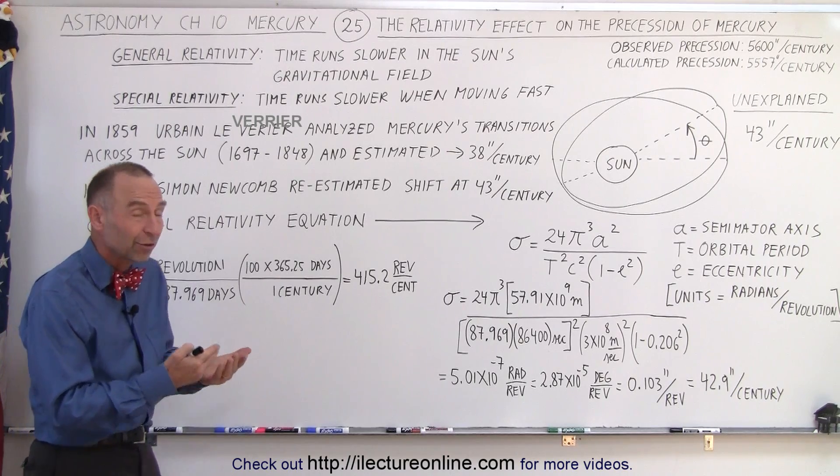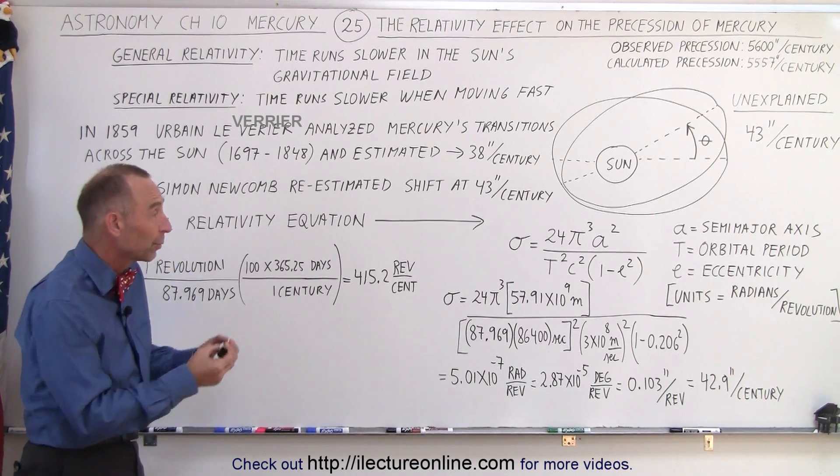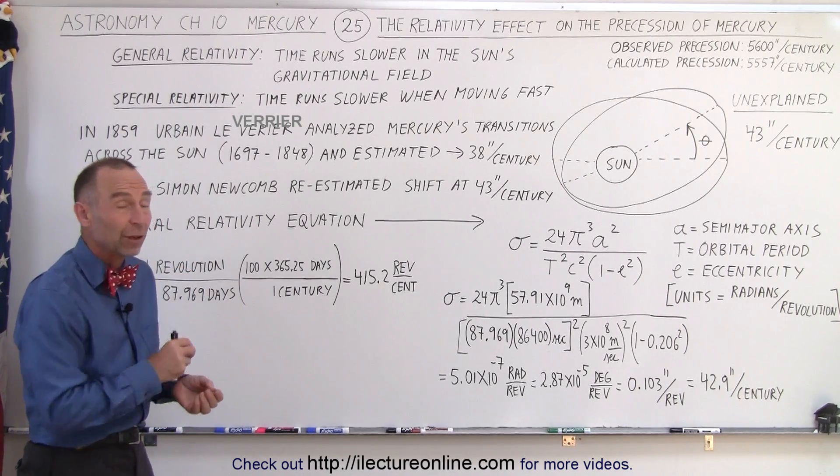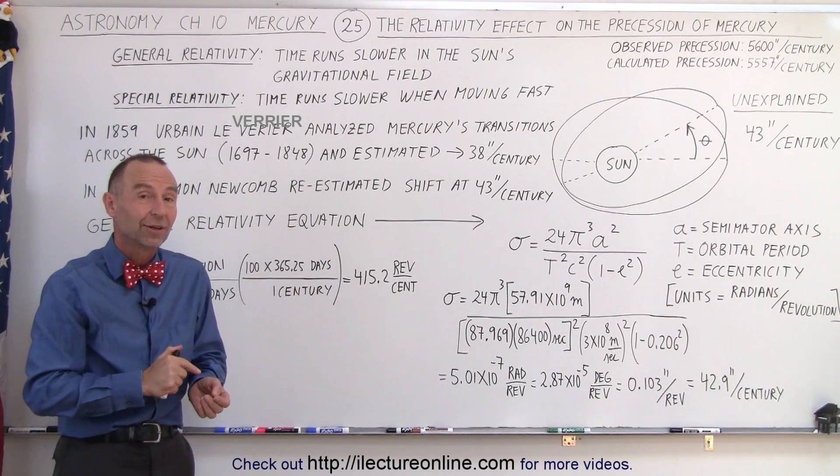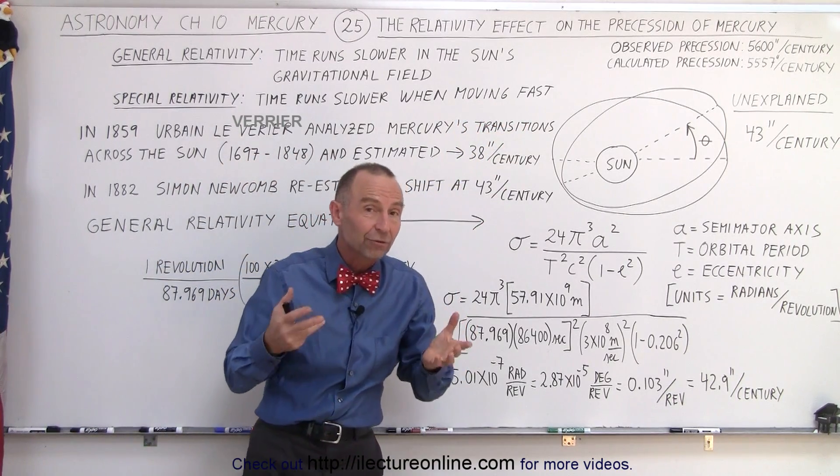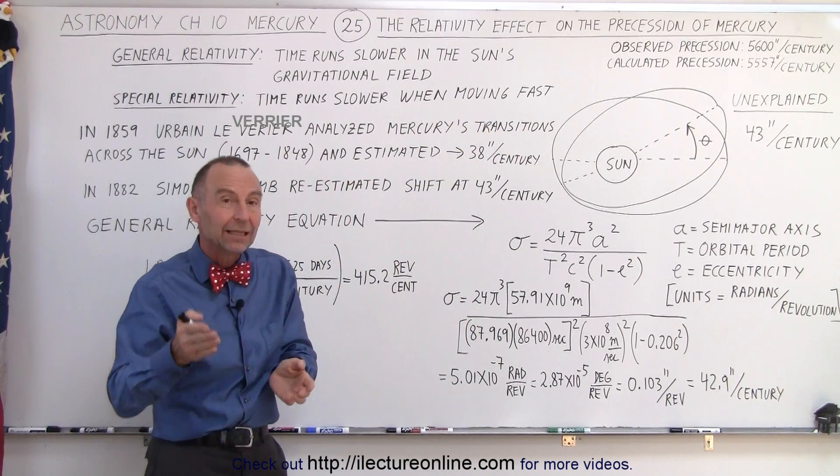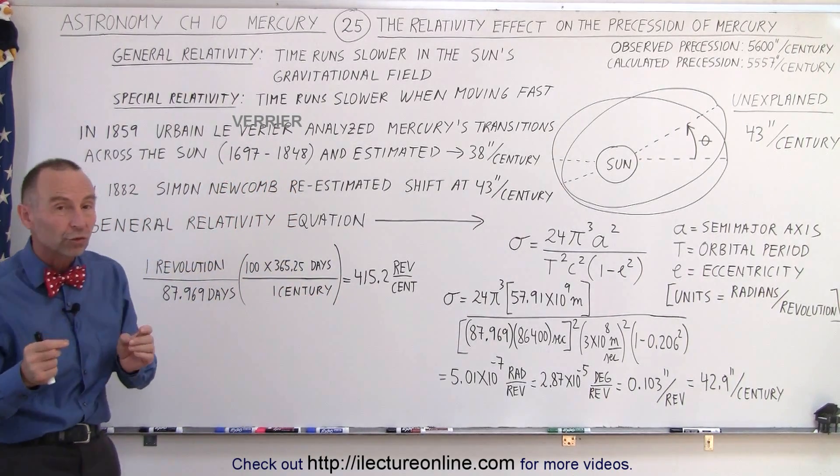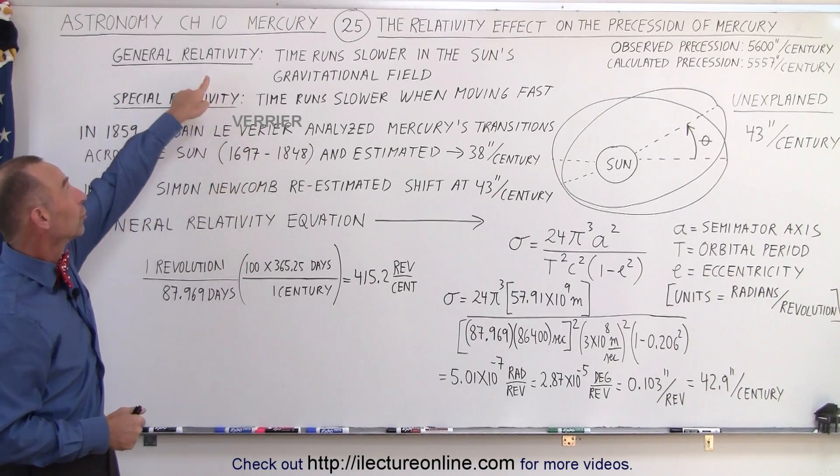So this is one of the ways in which the theories of relativity that Einstein came up with were actually proved to be correct. There is a measurable difference and without taking that into account we get the wrong observed result. The laws of Newton could not explain the precession motion of the orbit of Mercury.